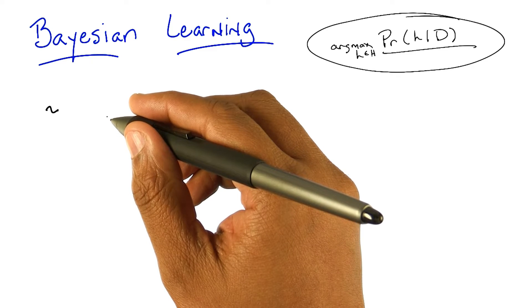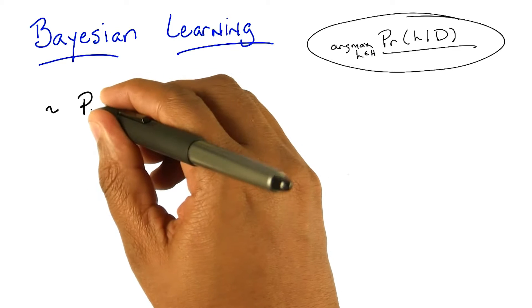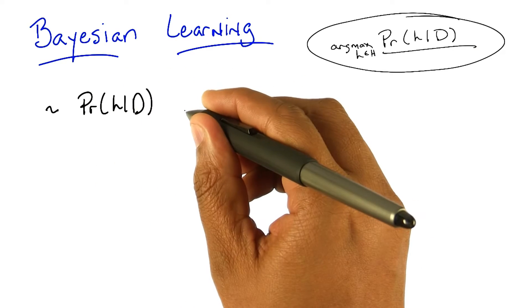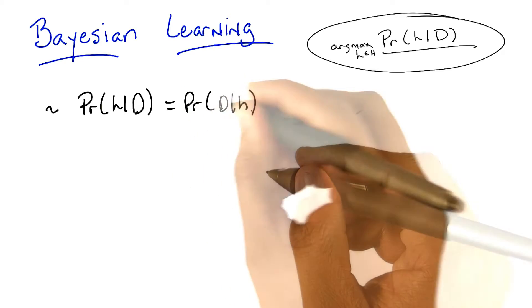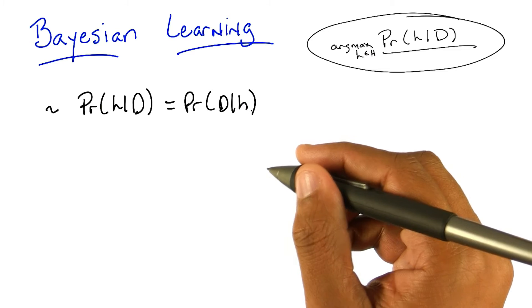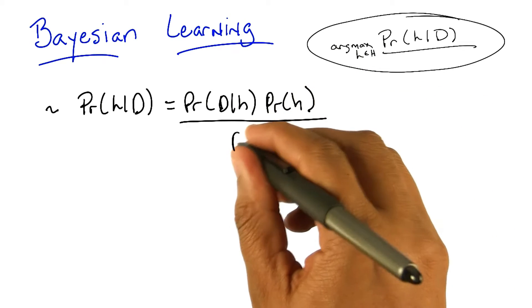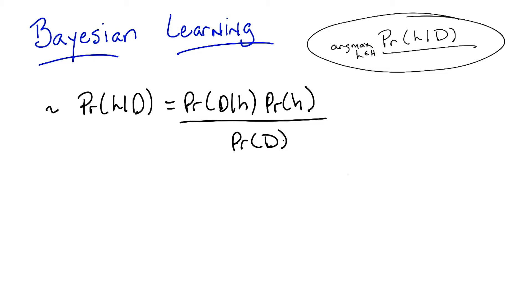So if we're going to apply Bayes' rule to the probability of H given D, we can turn it around and make it equal to the probability of D given H. And it would be great if we could just stop with that, but we can't. We have to put them in the same space. So we multiply by the probability of H and then divide by the probability of D. And sometimes that's just a normalization and we don't have to worry about it too much. But that's Bayes' rule right there.